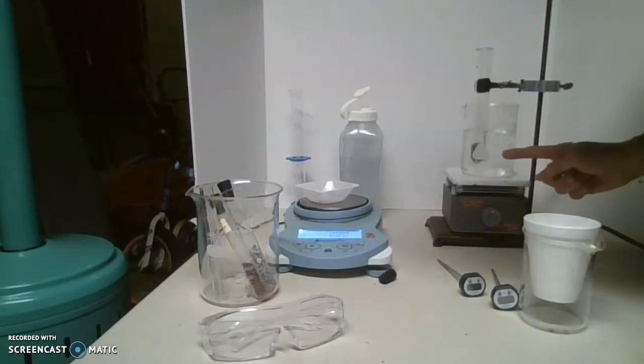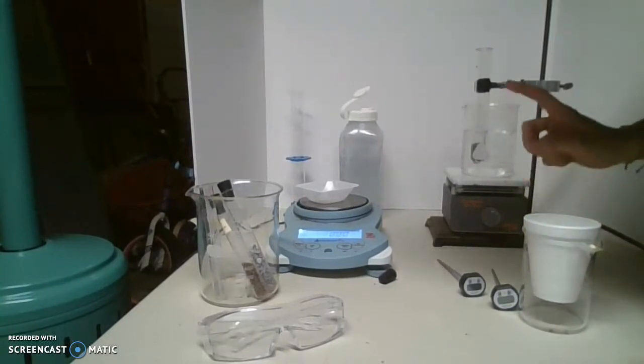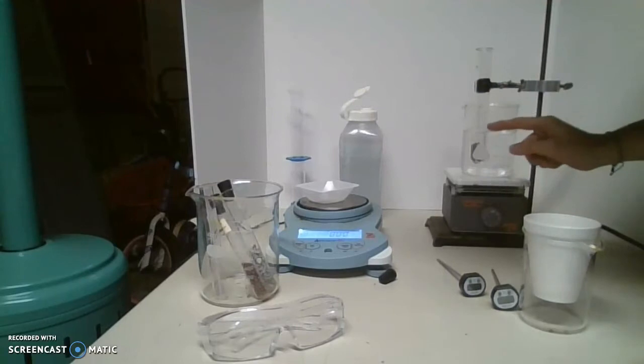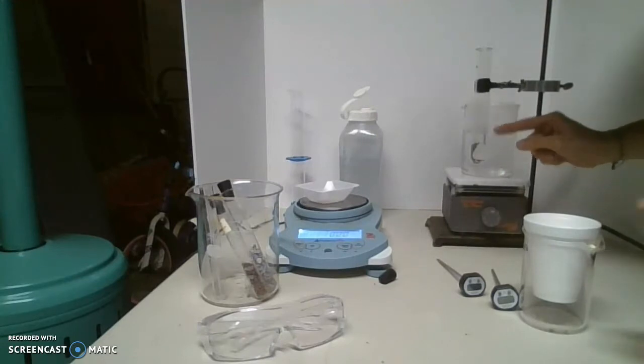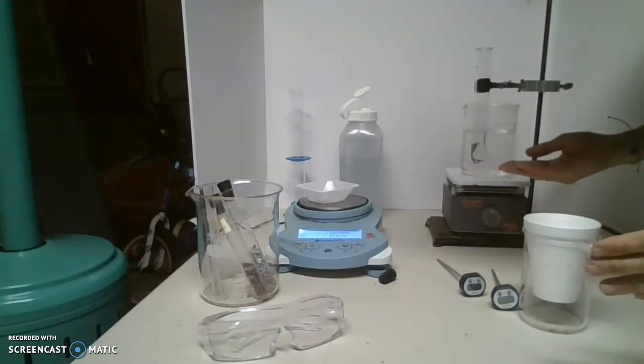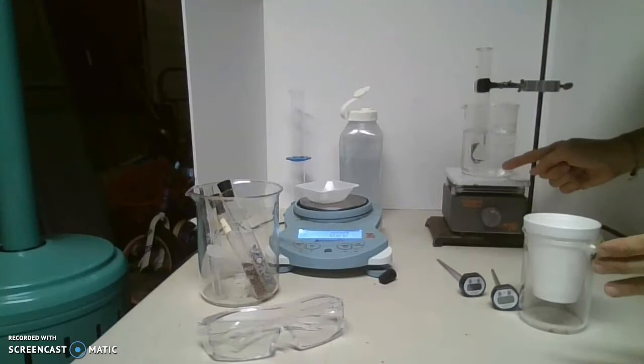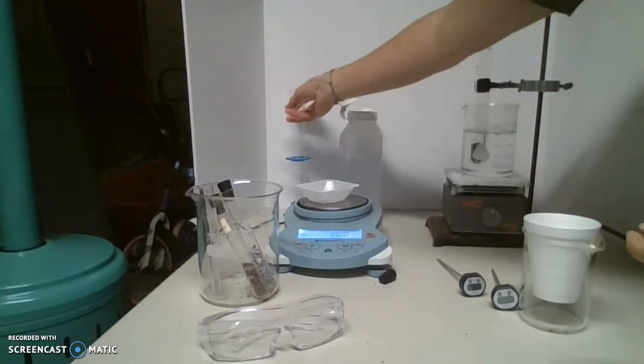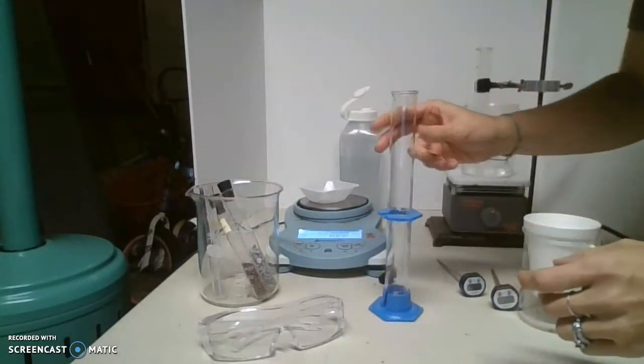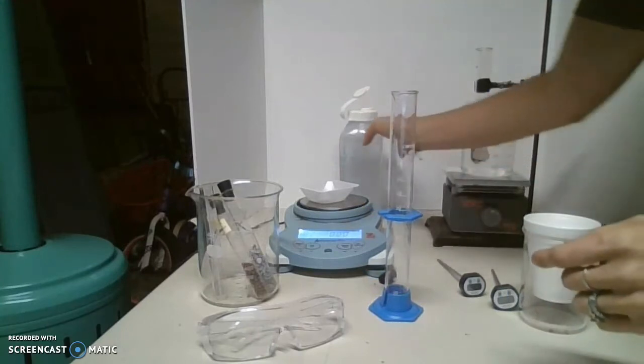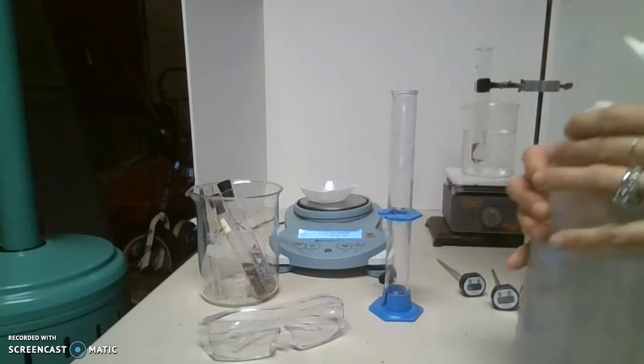While we wait for the water to boil for 10 minutes, we're going to leave it in the boiling water for 10 minutes so that we can assume the temperature of the metal is going to be 100 degrees Celsius. But while we wait, we're going to prepare our calorimeter.